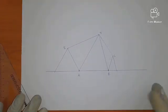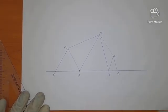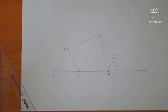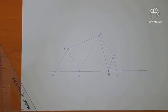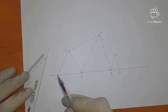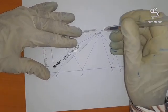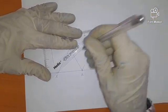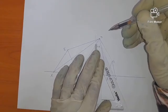We call this line XY. Next, we shall draw a triangle from this polygon of equal area. To convert the polygon to a triangle, we join BX and DY.